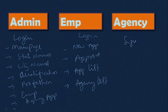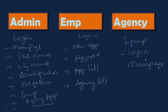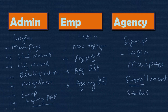For the agency module, agency can sign up. Once they sign up, their details come to admin. Admin has to give approval. Once approved, they can log in and go to the main page where they can do the enrollment. Once they do the enrollment, new applications appear in the employee portal. The employee can give approval, put pending, or approve the status. The agency can also see card status, the complete enrolled list, and the approved list - which cards are approved.